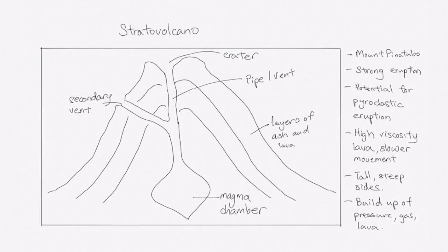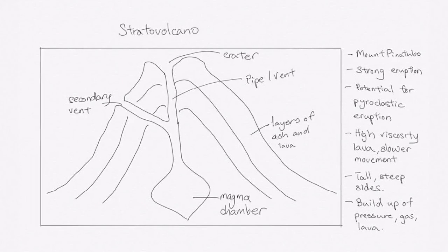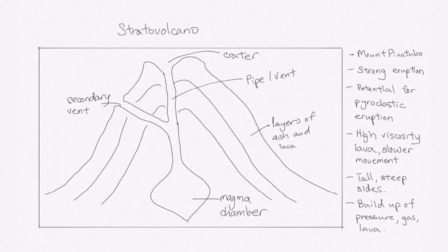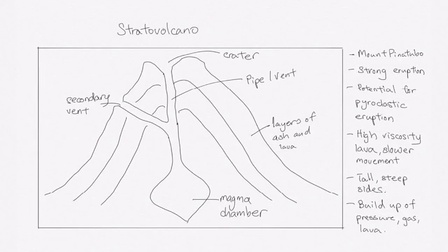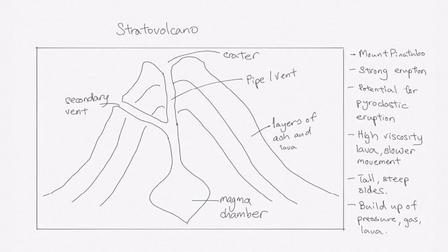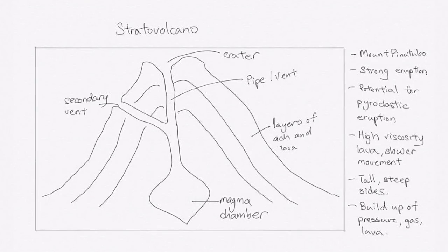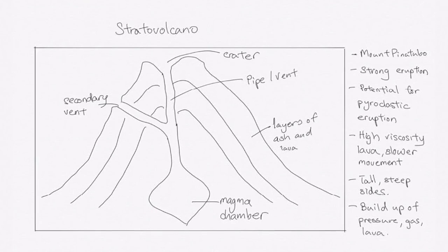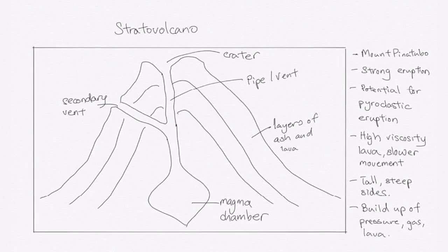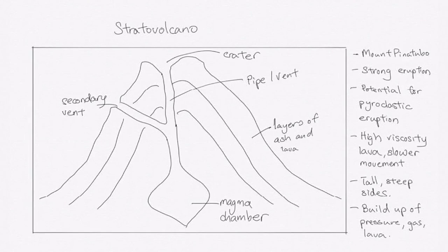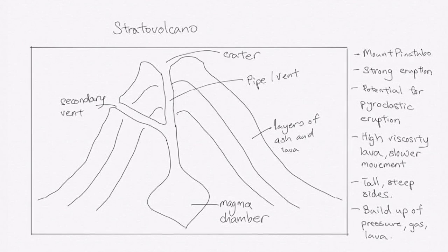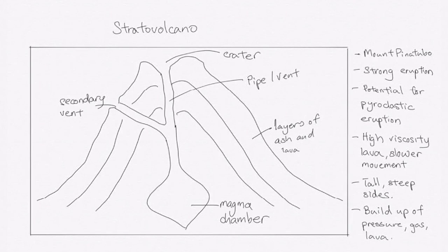Other key things that will happen for Stratovolcanoes include the potential for very strong eruptions, the relative high potential of forming pyroclastic eruptions, like the one that was experienced in Pompeii. The lava in this area tends to be high in viscosity, high in silica content, so the overall movement is slower. As a result of the slower movement, it is able to build tall, steep sides. But the other side effect of this very thick, slow-moving lava is there are times where it will get plugged in, and you have large build-up of pressure, gas and lava, which will come out in a massive eruption. So technically, your Stratovolcano eruptions tend to be much stronger than the eruptions you get from a shield volcano.